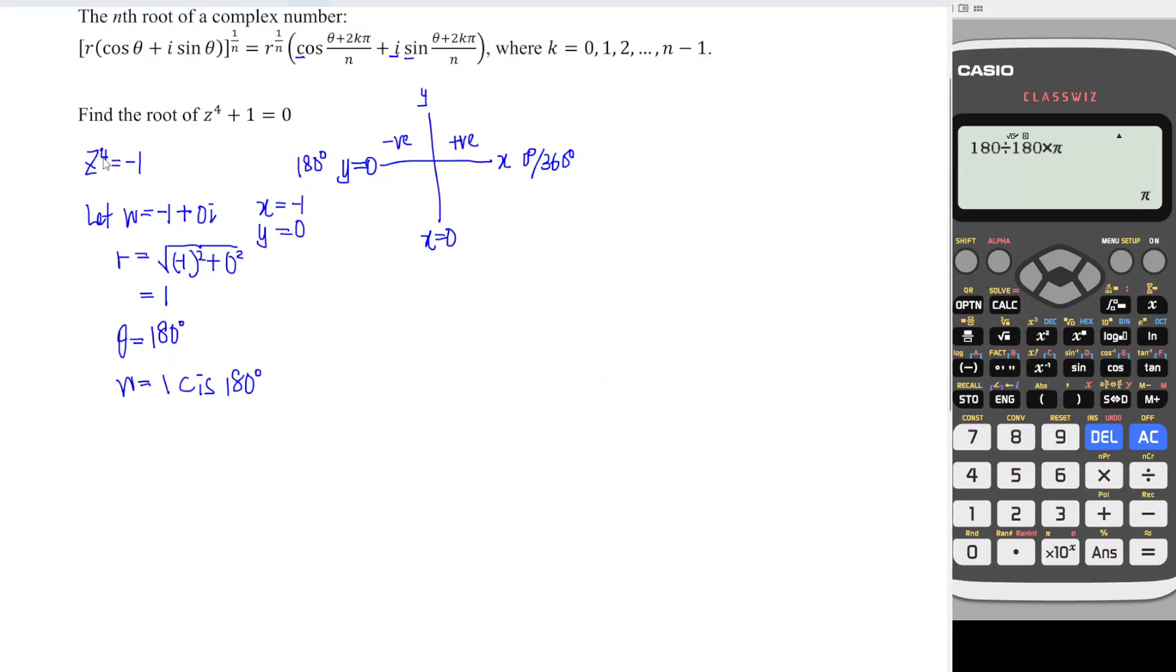Now we check, we have power 4, which means that we supposed to have 4 roots. Originally, we have 180 degree. Now we have 4, which means that it has to be divided by 4 to be fair. So divided by 4. This is another way of applying the formula.